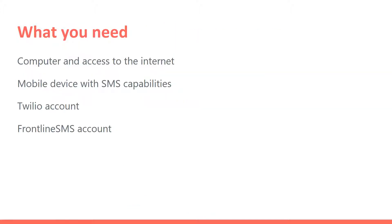In order to use Frontline SMS, there are a few things you're going to need to get started. First, you're going to need a computer — a laptop or desktop is fine — you just need good internet access. You need a mobile device with SMS capabilities; a cell phone is best. And a Twilio account, which is used to create a phone number from which you will send your messages. And of course, a Frontline SMS account, which you have to create to access the program.